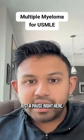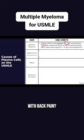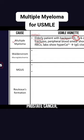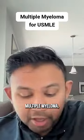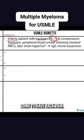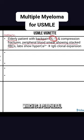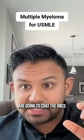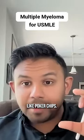Just to pause right here — remember that elderly patients with back pain, the differential diagnosis includes metastatic prostate cancer. But in the case of multiple myeloma, these patients are going to have back pain, but they're also going to have rouleaux formation, which is a peripheral blood smear showing stacked RBCs, as the antibodies coat the RBCs and stack them up like poker chips.